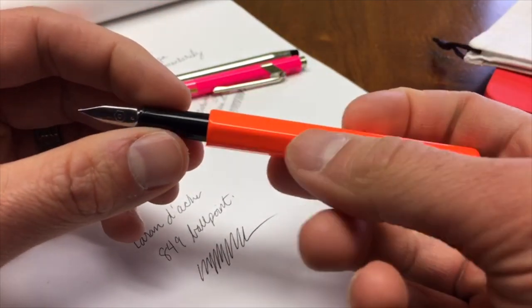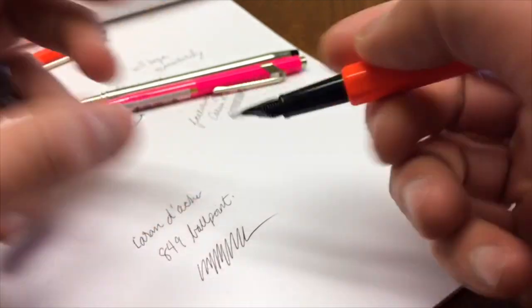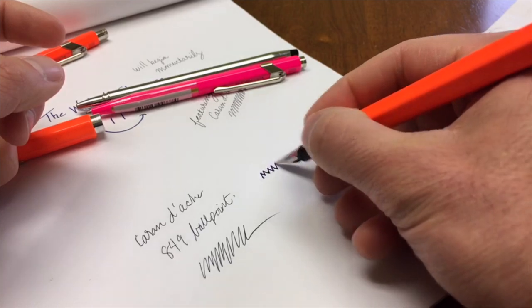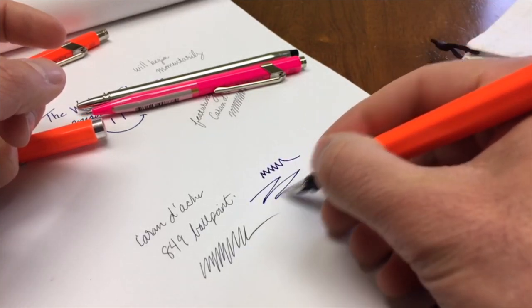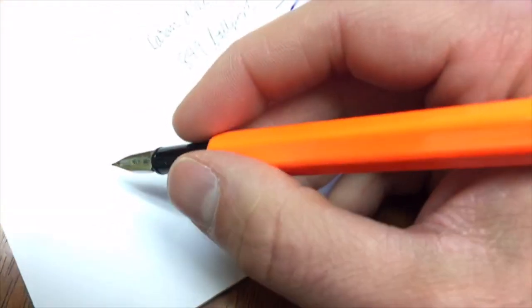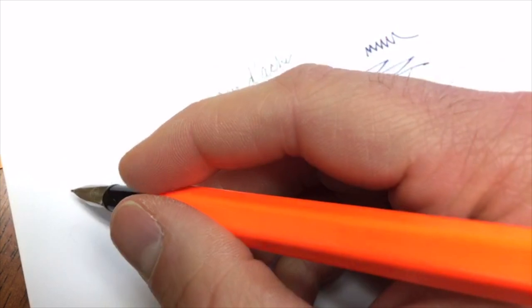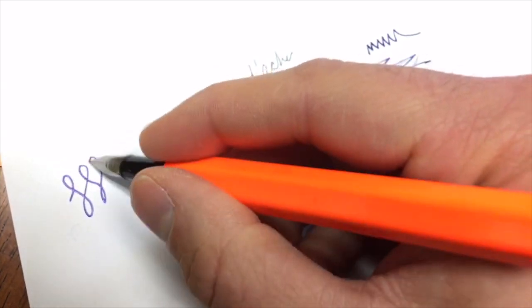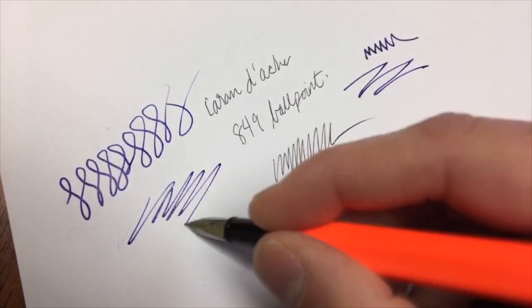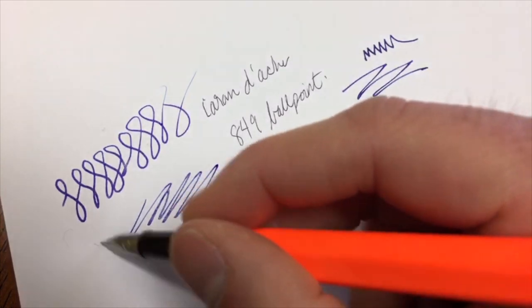It's a very thin section with a big step down from the barrel to the section, but it's not really bothering me so much. The nib itself is just a beauty—regular stainless steel, but it just writes so smoothly. I'm just whizzing around here scribbling and doodling.